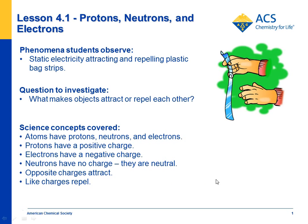In lesson 4.1, students observe plastic grocery bag strips attracting and repelling based on static electricity. The question is: why does that happen? What's going on at the molecular level to cause these strips to either attract or repel?